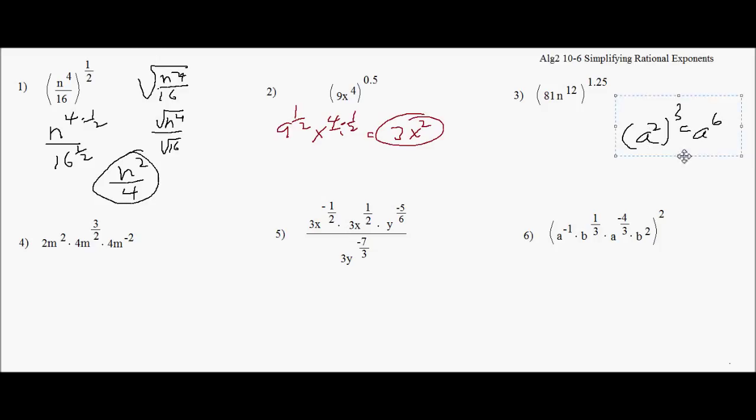Okay, a little harder. So I got, well, 1.25 is really 1 and 25 hundredths. 1 and 25 hundredths is really 1 and a fourth, which is really 5 fourths. So this is 81n to the 12th, to the 5 fourths power.